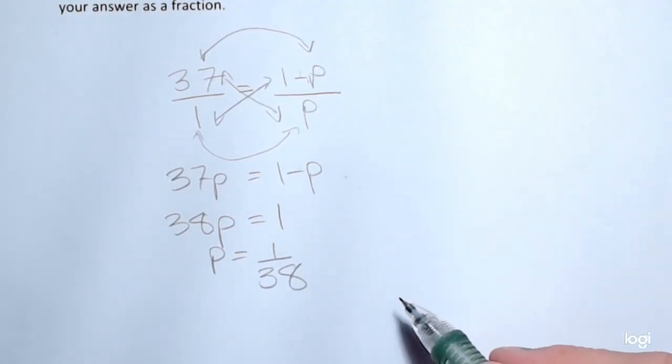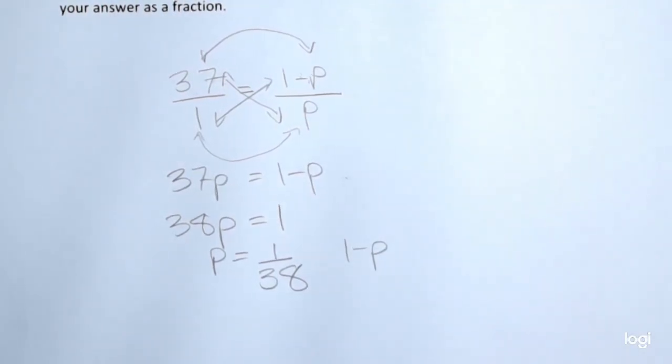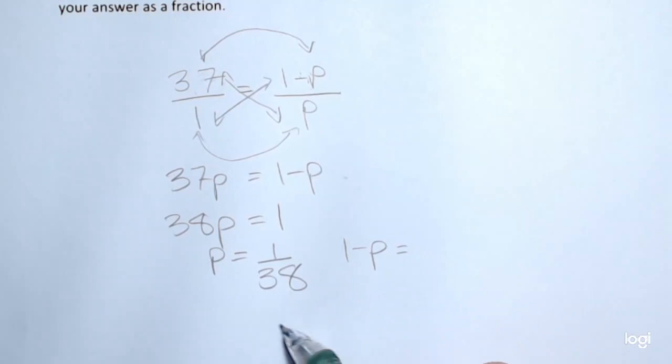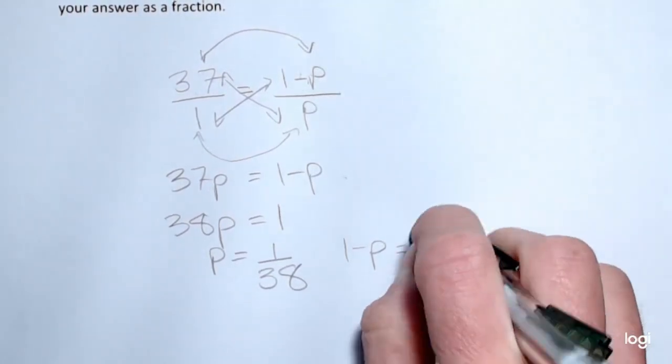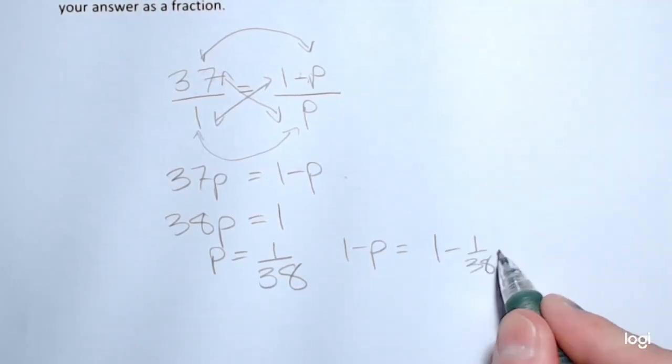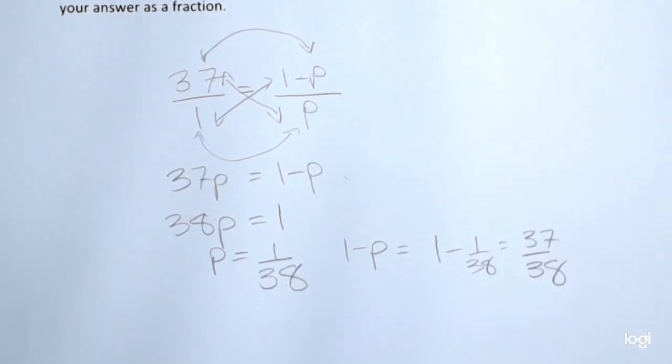The probability of losing will be the complement, or 1 minus p, because we just have two outcomes, winning or losing, and those are complementary events, and complementary events sum to 1. So 1 minus 1 over 38 is going to be 37 over 38, and you'll see that indeed p and 1 minus p add to 1.